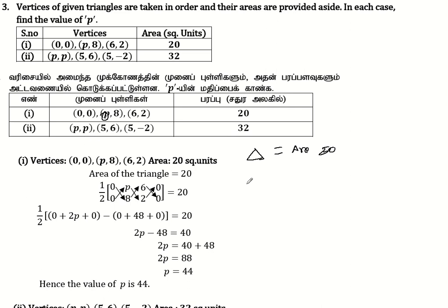The area of the triangle formula is: half into x1, y1, x2, y2, x3, y3, again x1, y1. This is the area of the triangle formula.